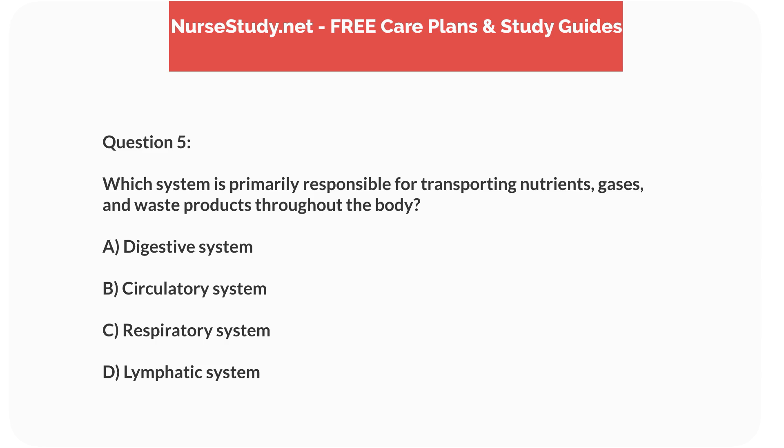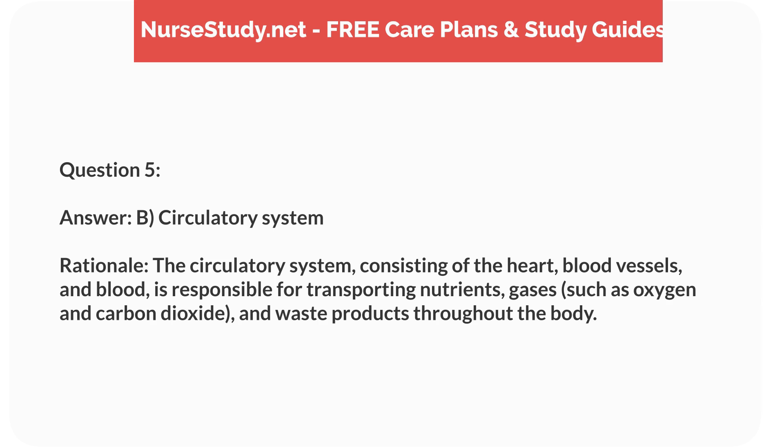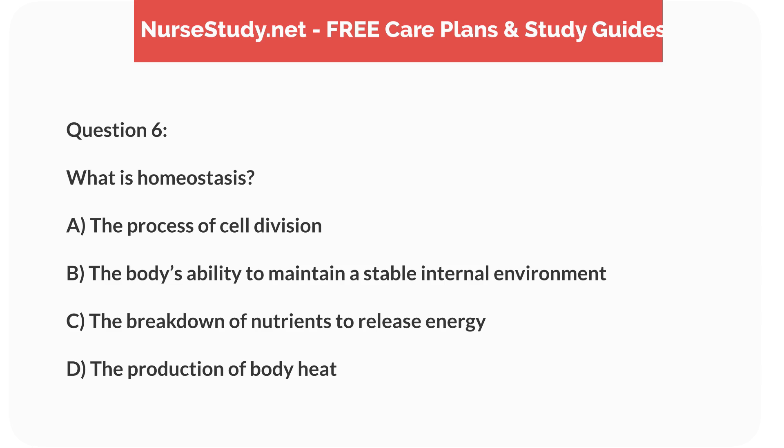Question 5: Which system is primarily responsible for transporting nutrients, gases, and waste products throughout the body? A) digestive system, B) circulatory system, C) respiratory system, D) lymphatic system. Answer: B, circulatory system. Rationale: The circulatory system, consisting of the heart, blood vessels, and blood, is responsible for transporting nutrients, gases such as oxygen and carbon dioxide, and waste products throughout the body.